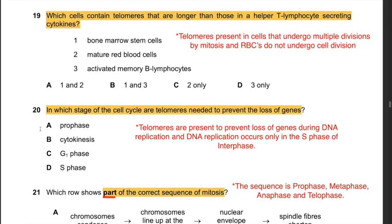Question 19: Which cells contain telomeres longer than those in a helper T lymphocyte secreting cytokines? Options: bone marrow stem cells, mature red blood cells, activated memory B lymphocytes. Mature red blood cells do not undergo mitosis or multiple cell divisions, so telomeres cannot be present there. That leaves answer B or D. Bone marrow stem cells do undergo multiple cell divisions, and activated memory B lymphocytes undergo mitosis when they encounter a foreign antigen. Therefore the answer is B: 1 and 3.